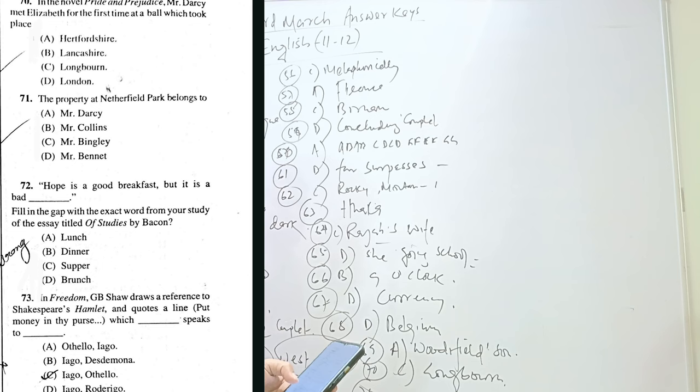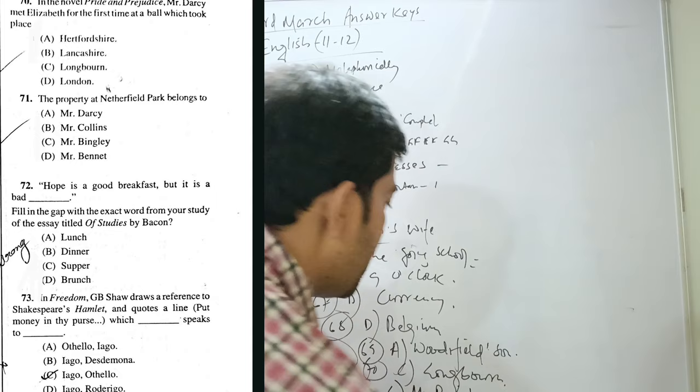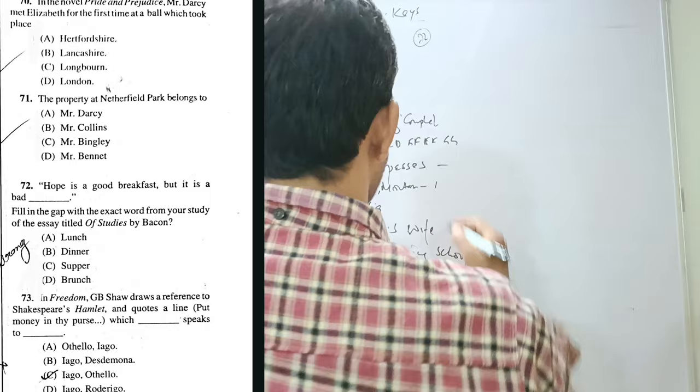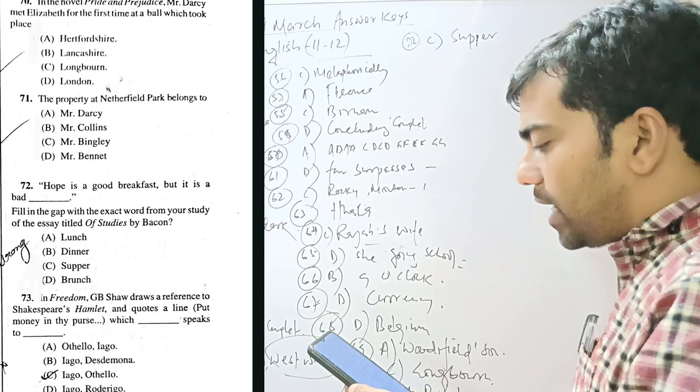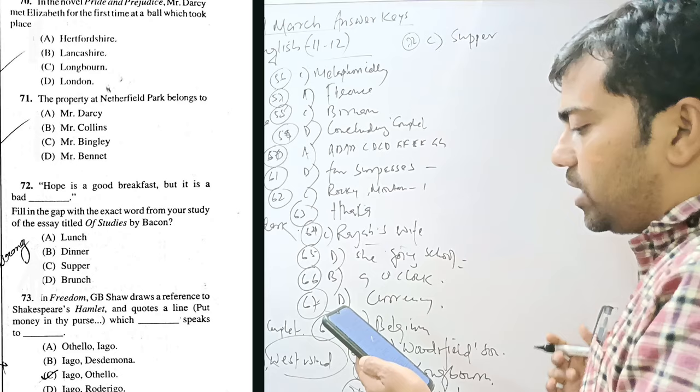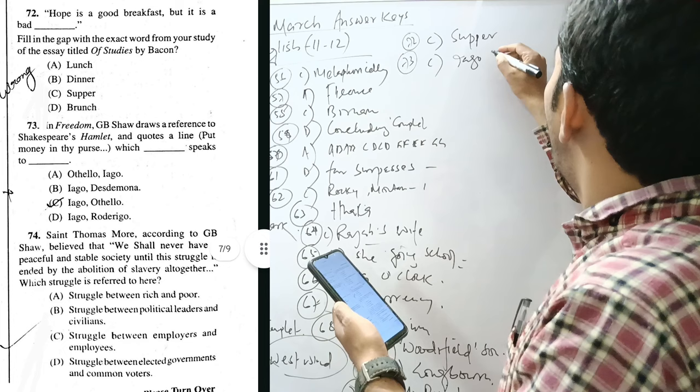The property at Netherfield Park belongs to Mr. Bingley. Netherfield Park is for Bingley. Hope is a good breakfast, but it is bad supper. In Pygmalion, G.B. Shaw draws a reference to Shakespeare's Hamlet and quotes the line Put money in thy purse. Which speaker to whom? Iago to Othello.